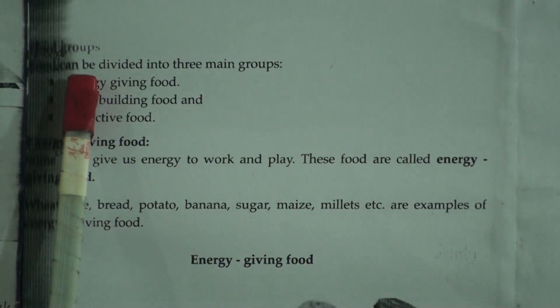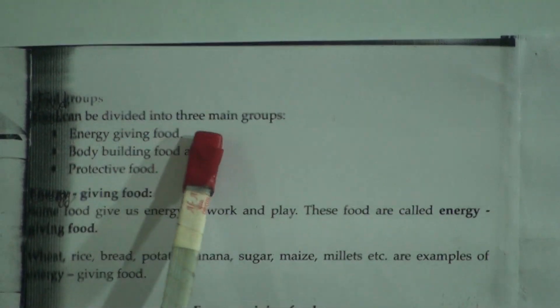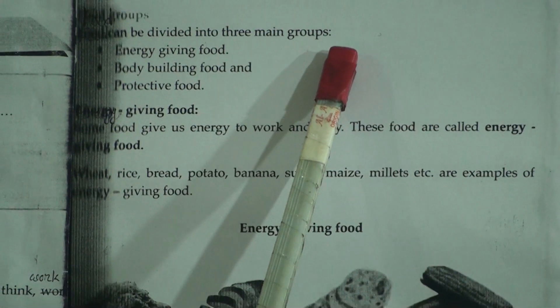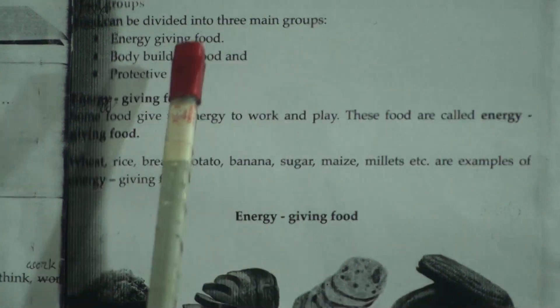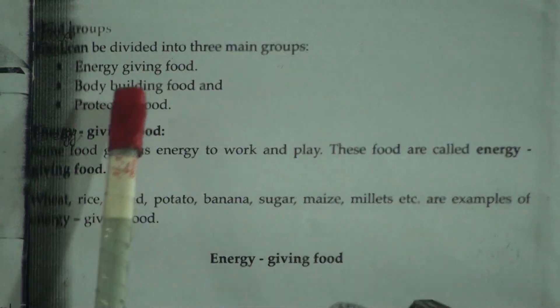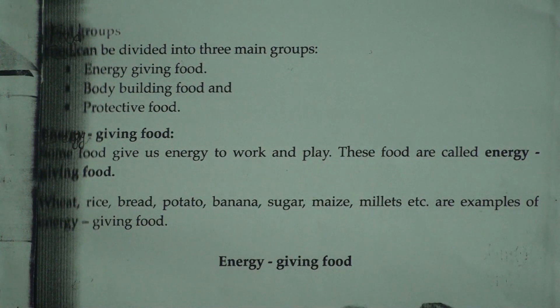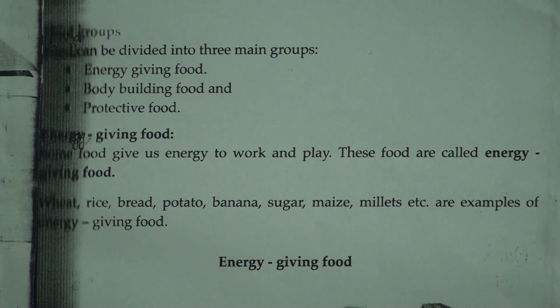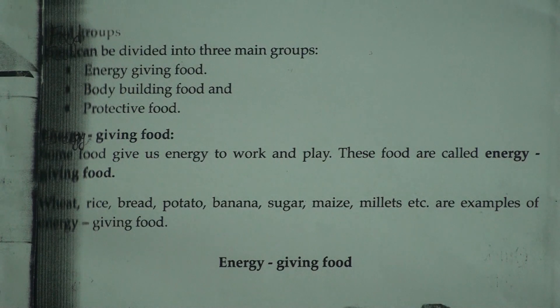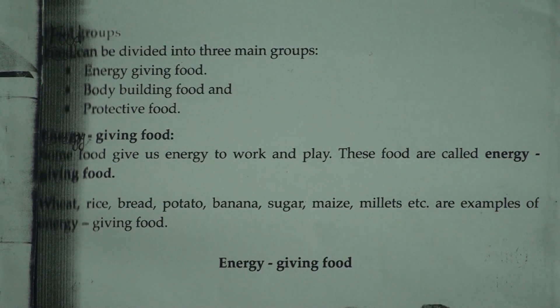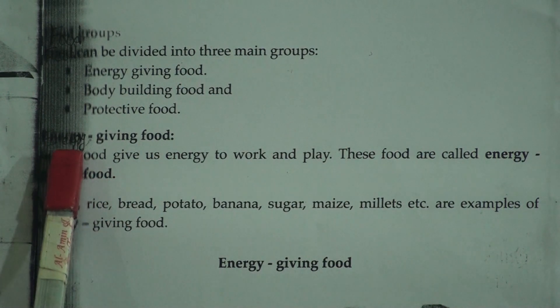Food can be divided into three main groups. They are energy giving food, body building food, and protective food. Now we will discuss each food group.